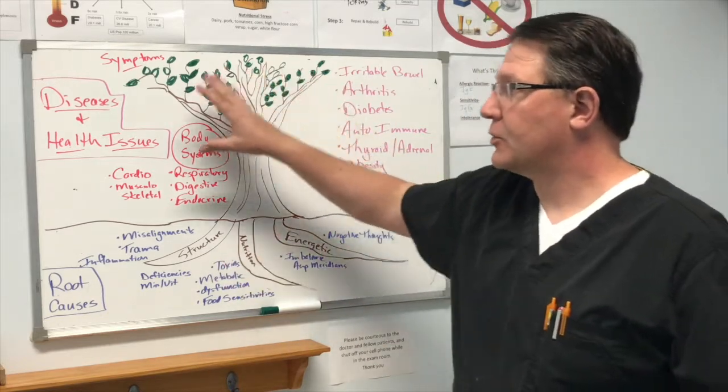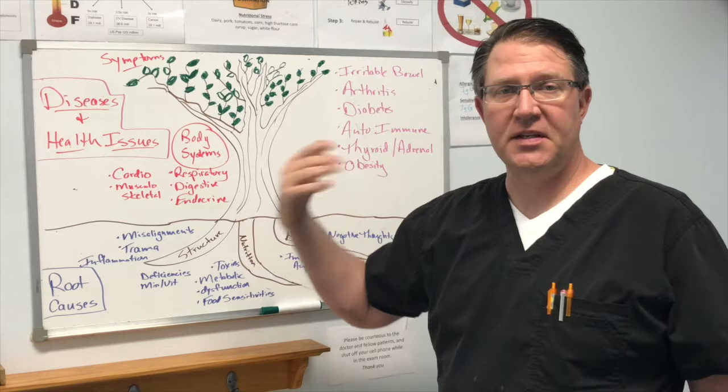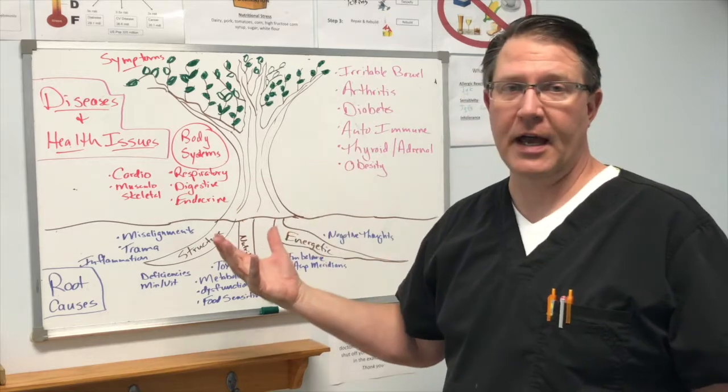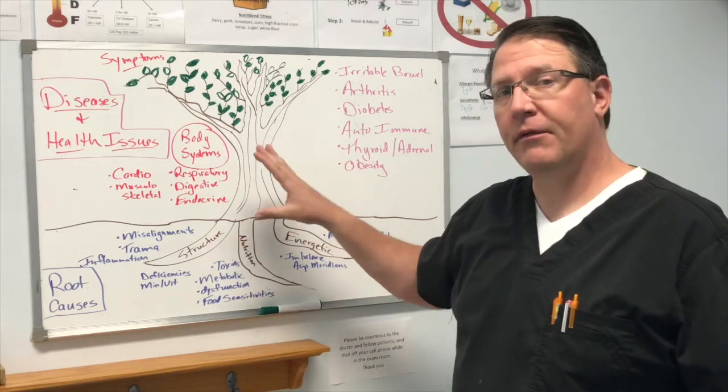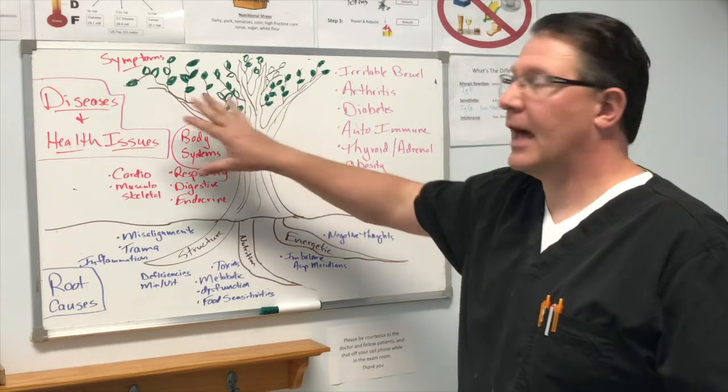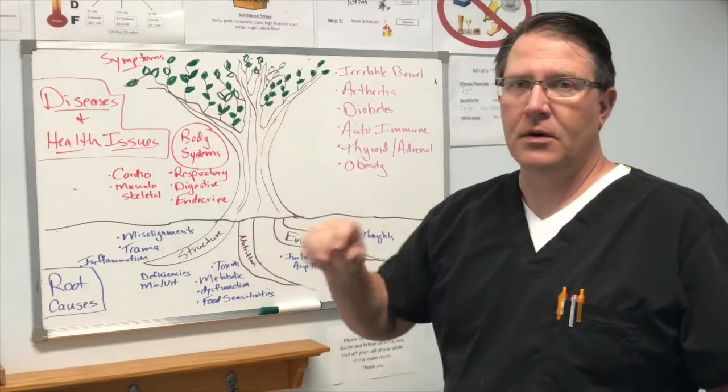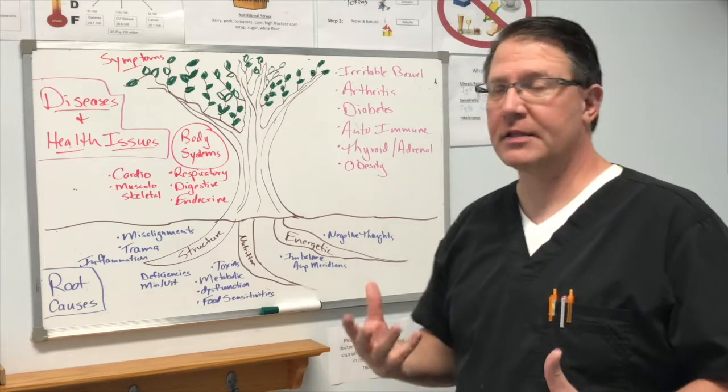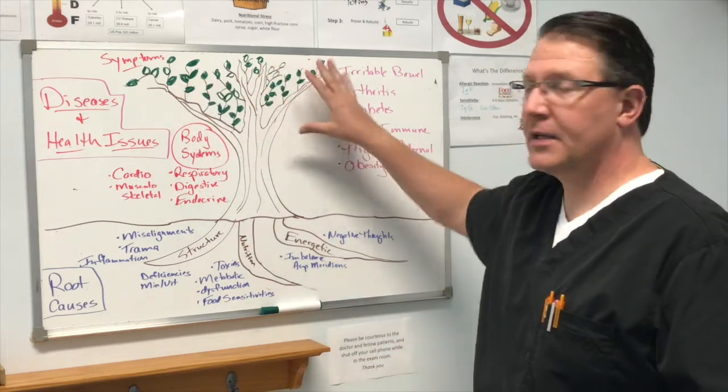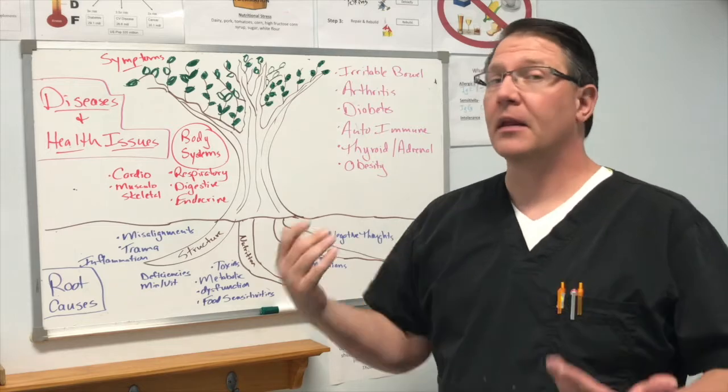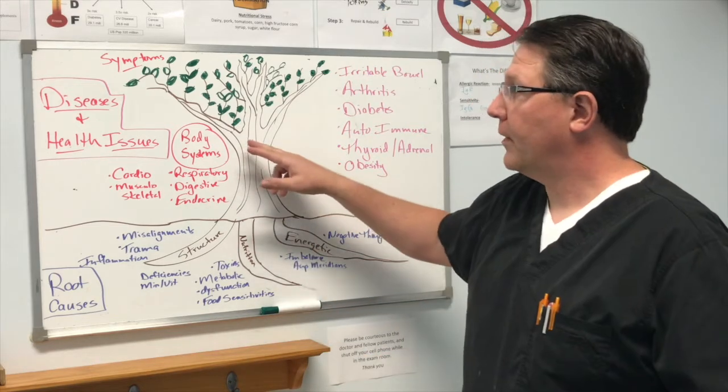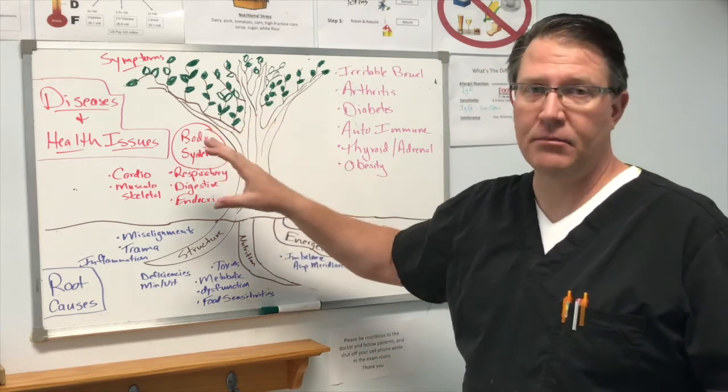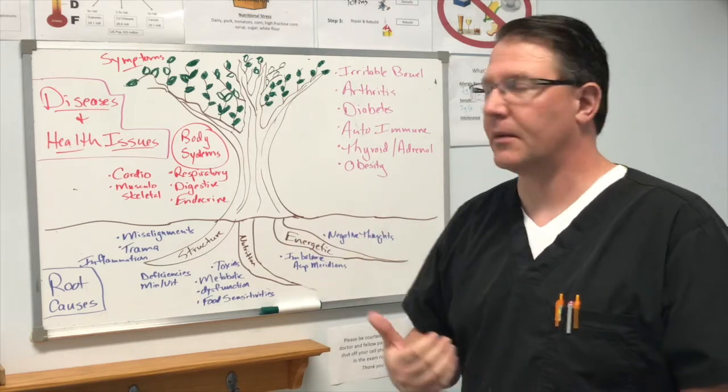This side of the tree is what we refer to as the disease or the health issue side. And when things start to malfunction and short circuit, we start to get a lot of symptoms. Maybe it's a cold, maybe it's pains, maybe it's aches, maybe it's high blood pressure, things like that. And the leaves represent symptoms. There can be a lot of things. They're all from necessarily the same body system, maybe the cardiovascular system or the muscular system.